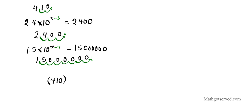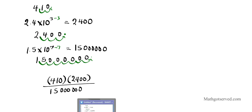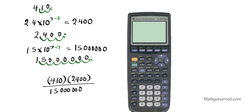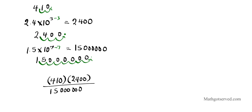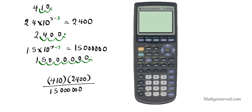Now we're going to put it all together. We have 410 multiplied by 2,400, divided by 15,000,000. We're going to plug this into our calculator, because the question asks us to express the answer in scientific notation. So we enter (410 times 2,400) divided by 15,000,000, and we get 0.0656.